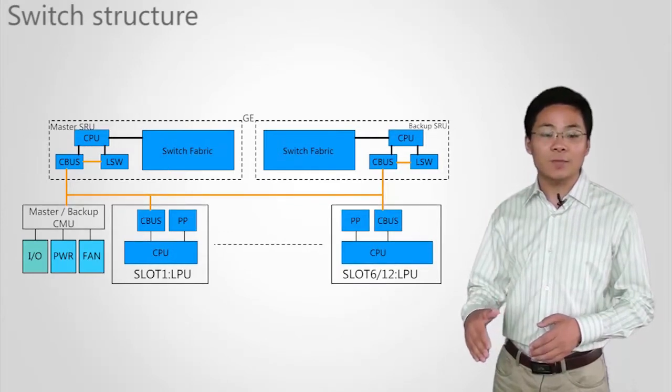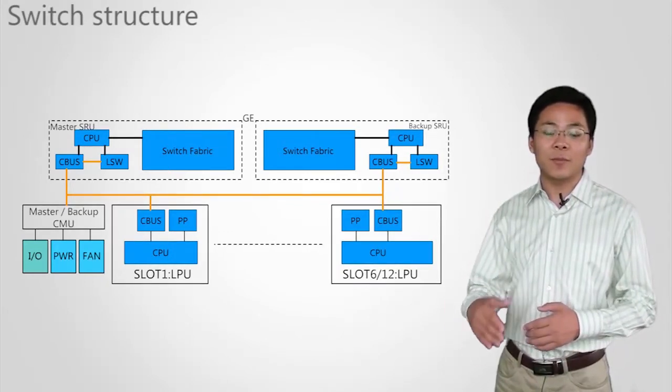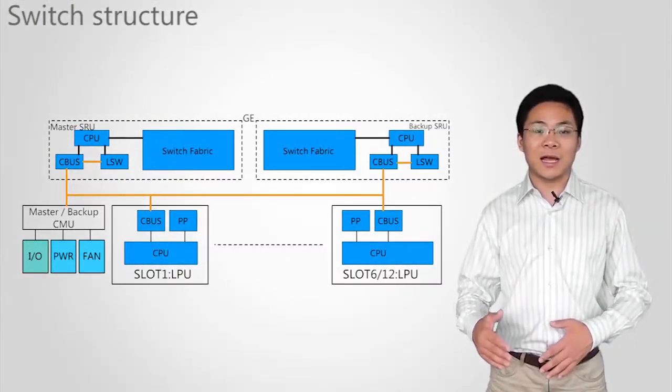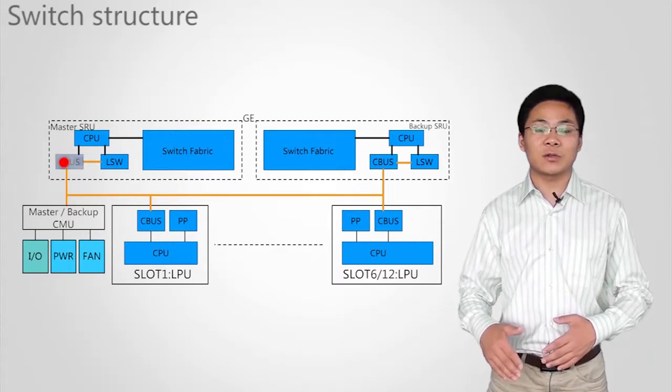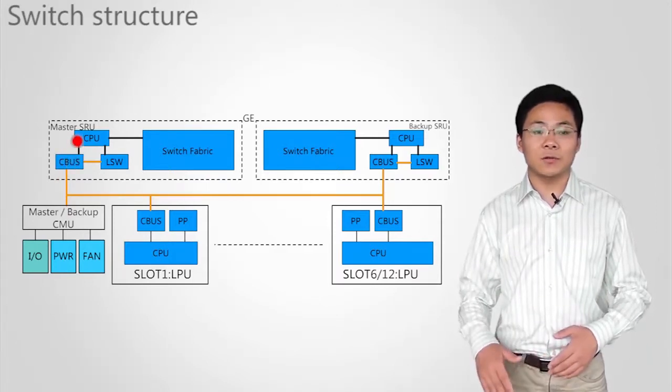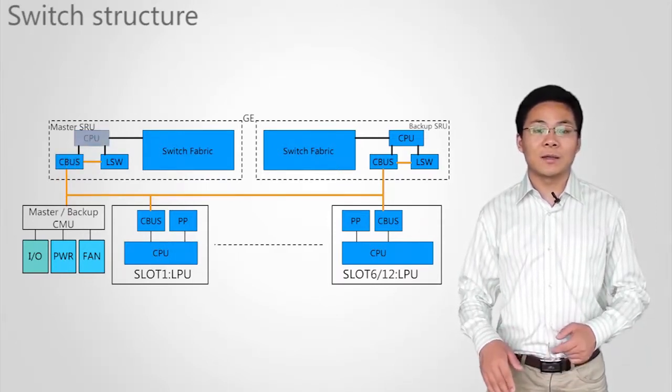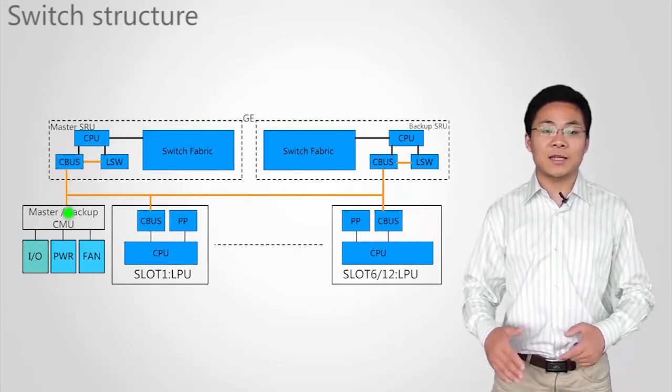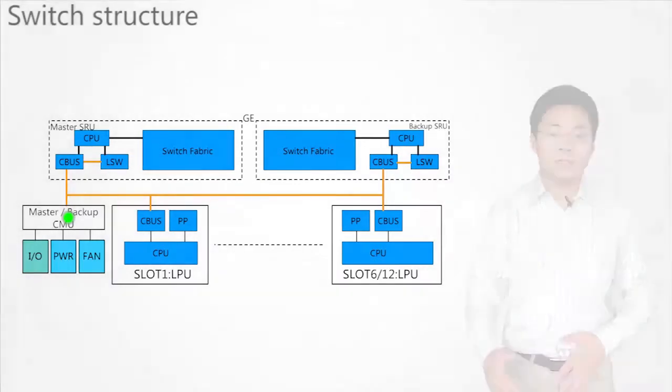The management plane is used exclusively for managing devices. The management plane uses the COMBUS line. CMU sends switch status information to the CPU of the SRU through the COMBUS line. The SRU's CPU processes the information and uses the COMBUS line to send a control command to the CMU.